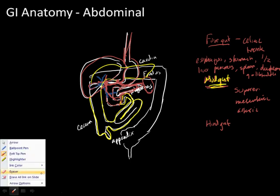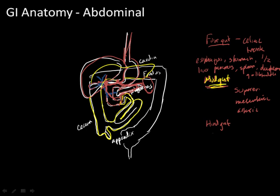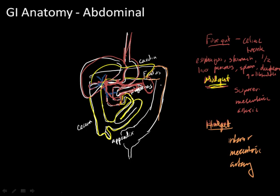The third, but definitely not least, is the hindgut. The hindgut is supplied by the inferior mesenteric artery, and comprises the last third of the transverse colon, the descending colon, sigmoid colon, as well as the rectum.